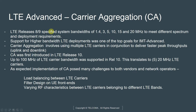LTE releases 8 and 9 specified system bandwidths of 1.4, 3, 5, 10, 15, and 20 MHz to meet different spectrum and deployment requirements. However, to support higher bandwidth LTE deployments, which was one of the top goals of IMT Advanced, we had to use some technique to combine multiple chunks of spectrum to deliver throughputs of about 1 gigabit per second or 300 megabits per second.